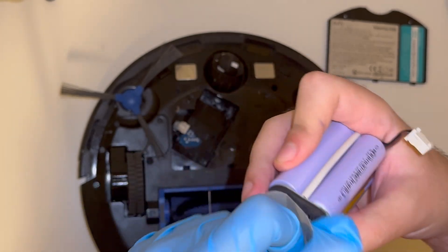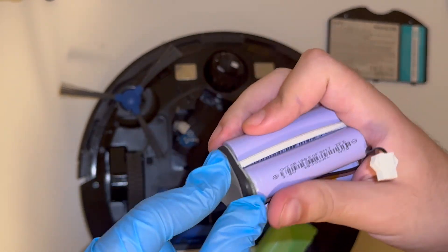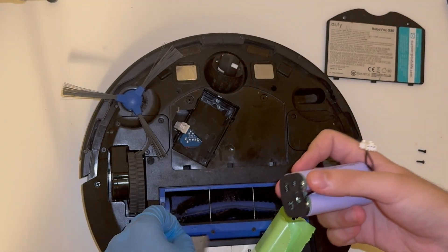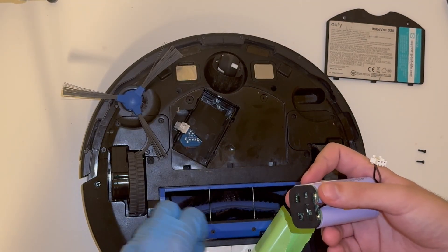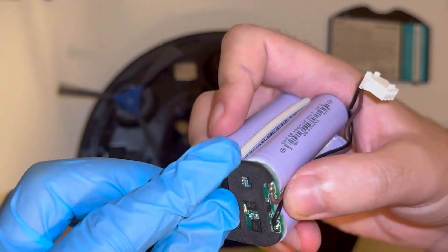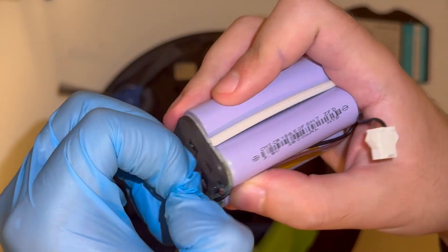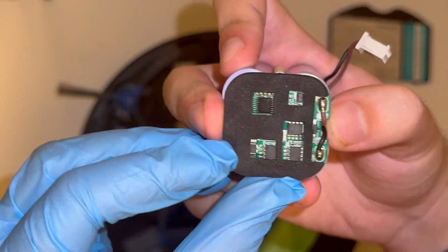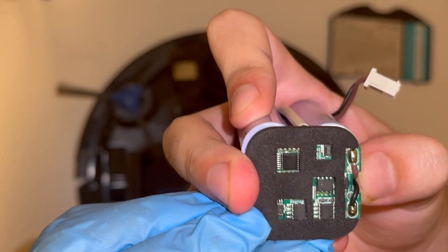Here you can see the BMS battery management system circuit board. So this does the balancing of the battery and it likely contains some sort of temperature management circuit that will shut the battery down if it gets too hot or too cold.